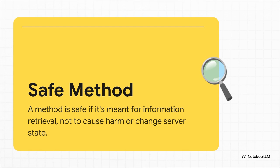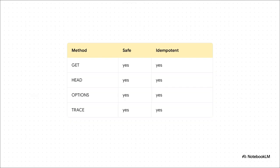Let's start our playbook with the methods that the RFC itself labels as safe. Our whole mission here is pretty simple: find clever ways to make these supposedly harmless, read-only methods do some very unsafe things. What does the RFC even mean by safe? The intent is that these methods are for looking, not touching. They shouldn't change anything, they shouldn't create anything, they shouldn't delete anything on the server. In theory, you could run them all day and nothing bad would happen. But we're here to test that theory. Here's the lineup: GET, HEAD, OPTIONS, and TRACE. The RFC calls them safe. You'll also see they're all marked as idempotent — meaning you can fire off the request once or a hundred times, and the server's state should end up exactly the same. Think about a web crawler — it depends on this. For us, though, that safe label is not a guarantee. That's a challenge.